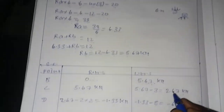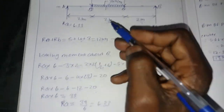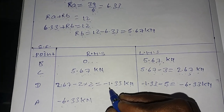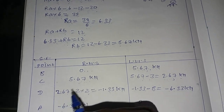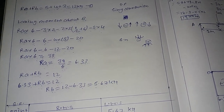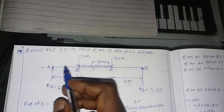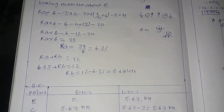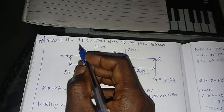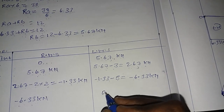At point D right-hand side, shear force is 2.67 minus UDL load into distance equals minus 1.33 kN. At point D left-hand side, the shear force is minus 1.33 minus 5 equals minus 6.33 kN. At point A right-hand side, shear force is minus 6.33 kN. At point A left-hand side, load is 0.